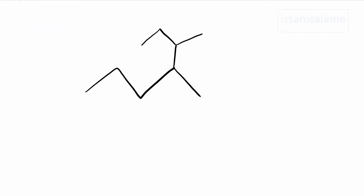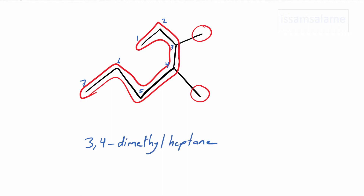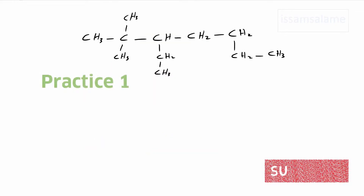Let's have another example, but here we have a skeletal formula. As I mentioned in the first video, a skeletal formula is drawn using segments where each segment represents two carbon atoms joined together. The longest chain is made up of seven carbon atoms, and we have two groups branched from it — each made of one carbon atom — so we have two methyls. We start numbering from the end closer to the substituents. The groups are located at carbons 3 and 4, separated by a comma, giving us 3,4-dimethylheptane.